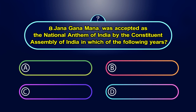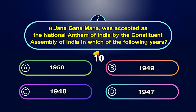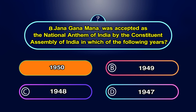Jana Gana Mana was accepted as the National Anthem of India by the Constituent Assembly of India in which of the following years? Option A. 1950, Option B. 1949, Option C. 1948, Option D. 1947. Your time starts now. The answer is A. 1950.